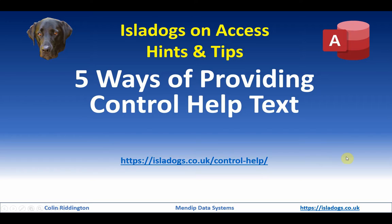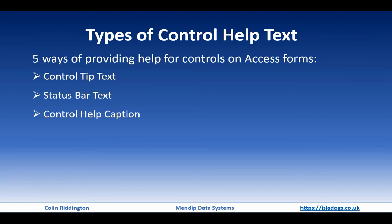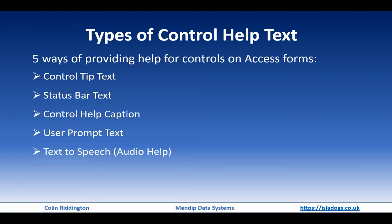Let's explain the different methods I'm going to show you. The simplest, built into Access, is control tip text — no code required. Second is similar text on the status bar at the bottom of the screen. Third is to provide captions yourself, which you can format how you like. Fourth, for new records, you can put prompt text to help your users. Lastly, audio help — particularly useful for users with poor eyesight — gets Access to speak the help using text to speech. There is of course a sixth method: you could write a massive manual, maybe 1000 pages, but none of your users will ever look at it.